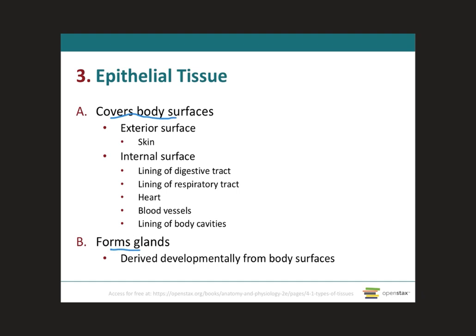With regards to body surfaces, it can either be external or internal. External has to be the skin, because the skin is what's located externally in our body. Internally, it's going to line organ systems, the inside of organ systems — so your digestive tract, your respiratory tract, even your heart, your blood vessels — and then it will also line your body cavities, which we mentioned in module one.